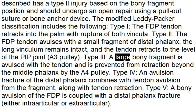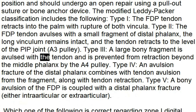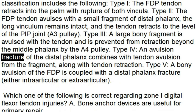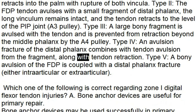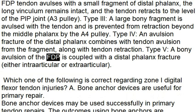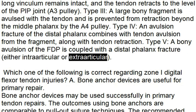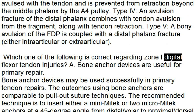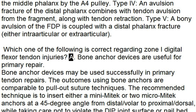Type 3 — a large bony fragment is avulsed with the tendon and is prevented from retracting beyond the middle phalanx by the A4 pulley. Type 4 — an avulsion fracture of the distal phalanx combines with tendon avulsion from the fragment along with tendon retraction. Type 5 — a bony avulsion of the FDP is coupled with a distal phalanx fracture, either intra-articular or extra-articular. Regarding Zone I digital flexor tendon injuries: bone anchor devices are useful for primary repair.